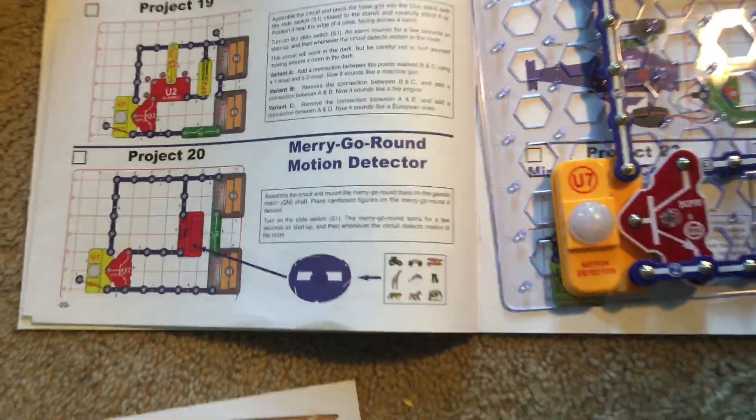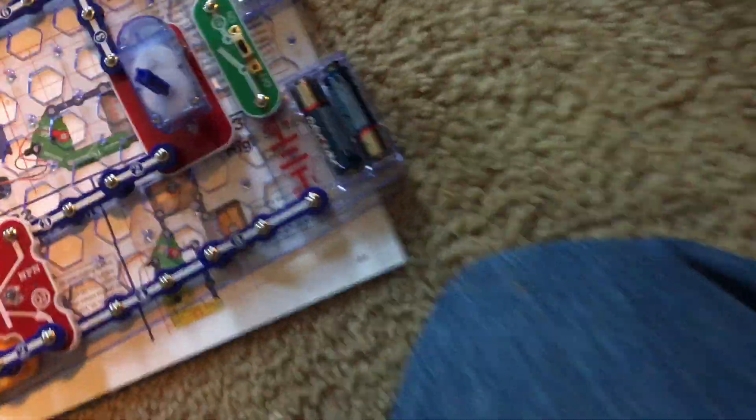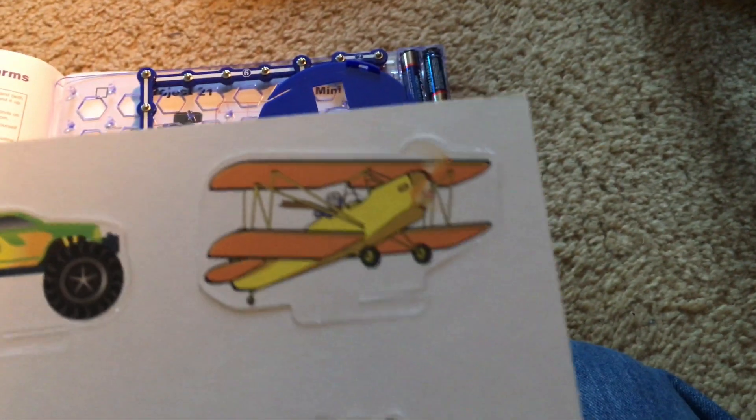For this project, Merry-Go-Round Motion Detector, I'm going to put this platform called the Merry-Go-Round on the motor and then I'm going to put one of these cardboard cutouts. You don't have to, but I'm going to do it.